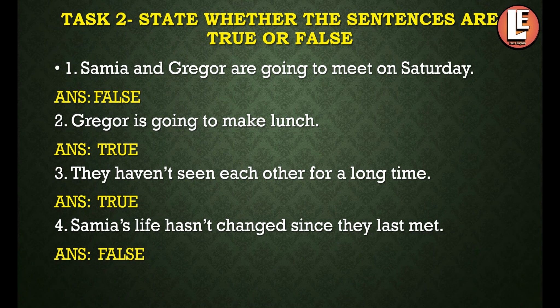The next activity is: state whether the sentences are true or false. First sentence — Samina and George are going to meet on Saturday. This is false because Gregor is mentioned. Second — Gregor is going to make lunch. This is also related to the passage. Third — Samina's life hasn't changed since they last met. This is also false.